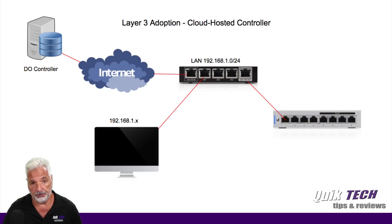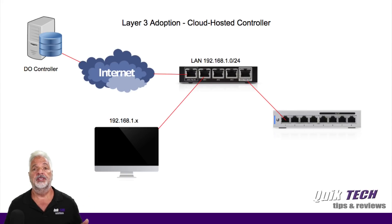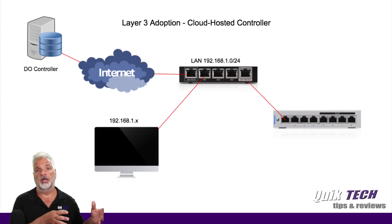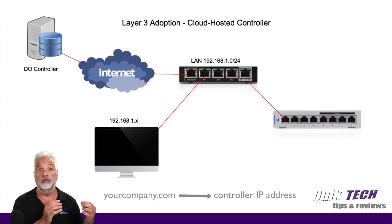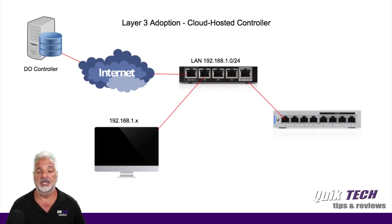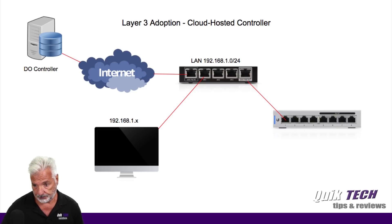As you can see, I have my network connected to the internet and connected to a DigitalOcean cloud-based controller. In this case, we're going to use DNS resolution to tell the UniFi switch on my network where the controller is located in the cloud. I'm going to do that using FQDN — a fully qualified domain name. You have to take your domain, your company.com, and point that domain using DNS to the public IP address of your cloud-hosted controller. That's a topic for another video, but it has to be set up in the background for this scenario to work.